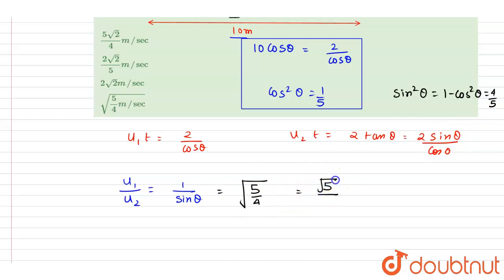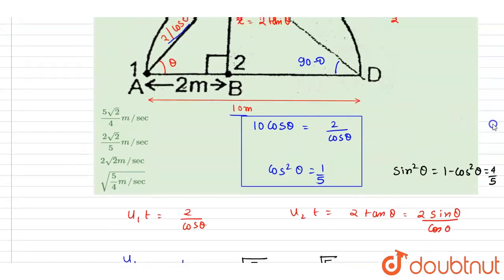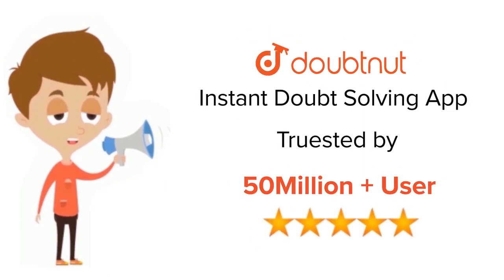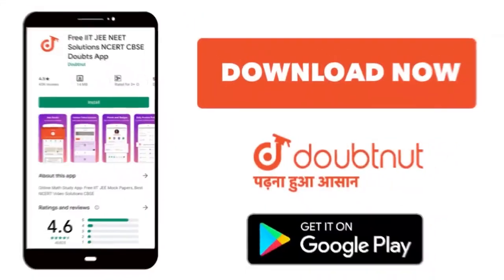Now you can check for the option - square root 5 by 2. So yes, D is the correct one. Thank you. For class 6 to 12, IIT, JEE and NEET level, trusted by more than 5 crore students, download Doubtnet app today.